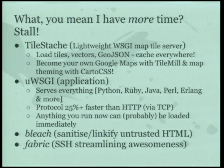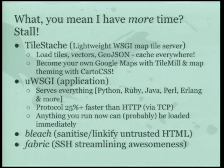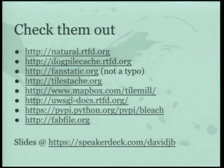Some more tools: TileStash runs in Python and serves maps. Combine it with TileMill and you can serve maps using CSS and become your own Google Maps competitor. UWSGI is an application container that serves everything from Python, Java, Ruby, Perl, Erlang and more. In my experience it's about 25% faster than the HTTP protocol.